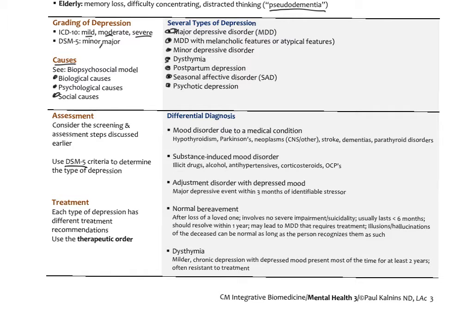Most patients in the clinic receive a PHQ-2 first — a two-question inventory. If that's positive, we give them the PHQ-9 and go from there to stage the depression. It's important to differentiate depression from mood disorders due to medical conditions like low thyroid, Parkinson's, cancer, stroke, dementia, or parathyroid disorders.